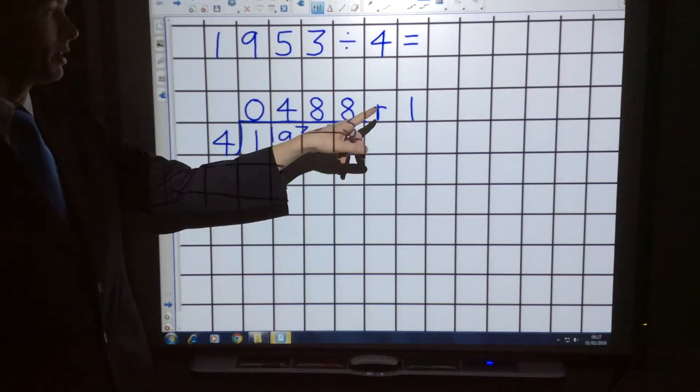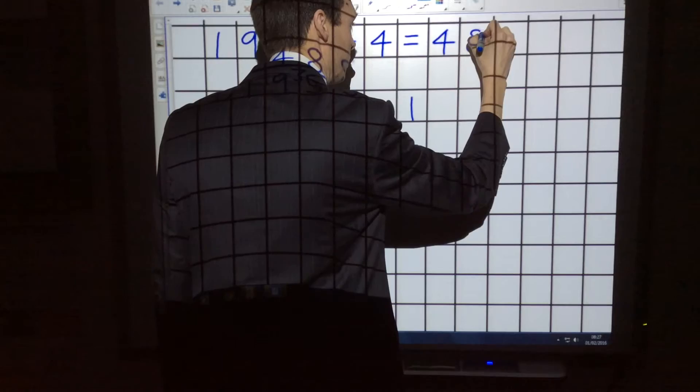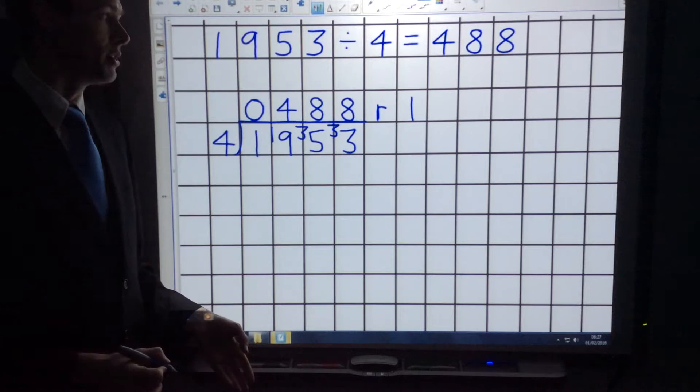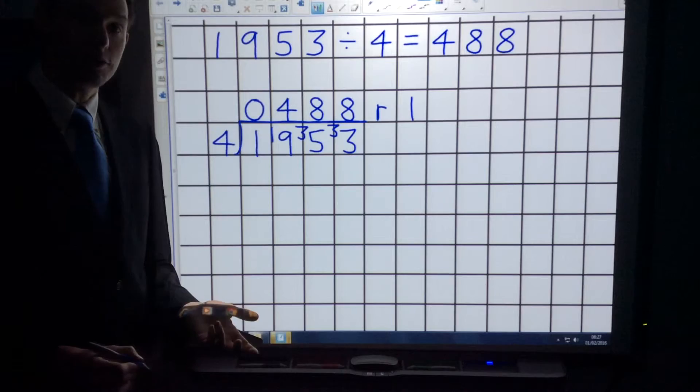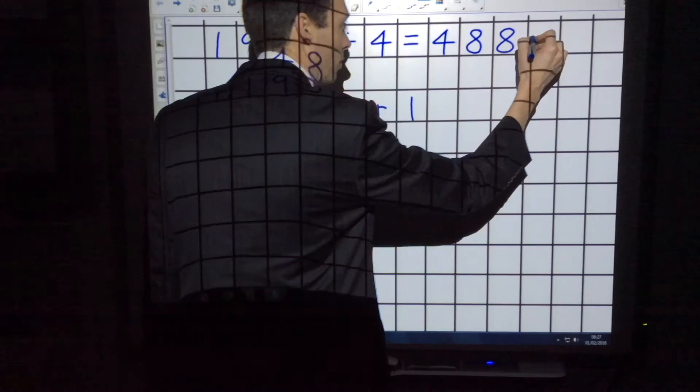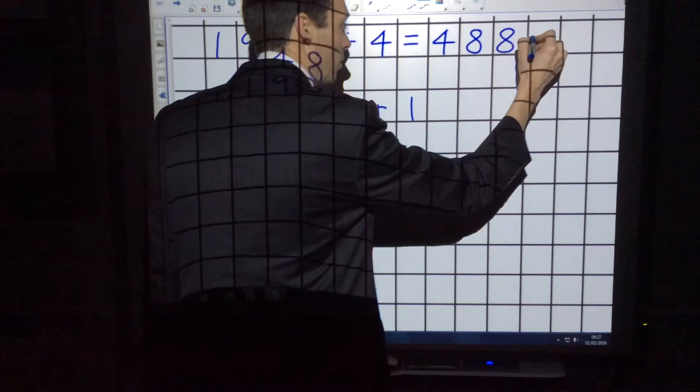And the answer is four hundred and eighty-eight remainder one. Bear in mind, I can also write the remainder a variety of ways. I could write it as a decimal or a fraction, for instance. In this example, I'm going to write it as a fraction. I have one left over, out of a possible four. So the remainder is one out of four, a quarter. And the answer is four hundred eighty-eight and a quarter.